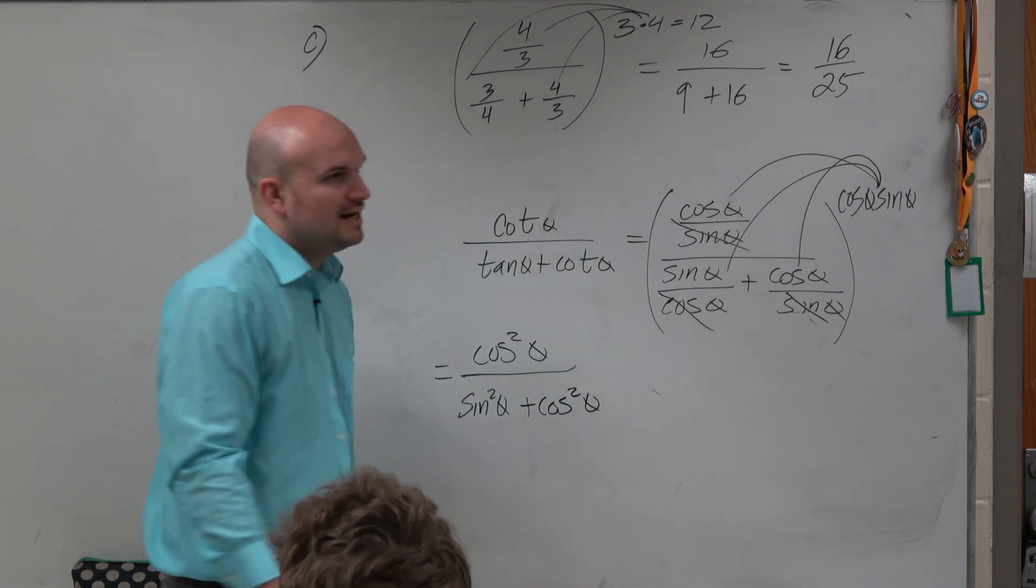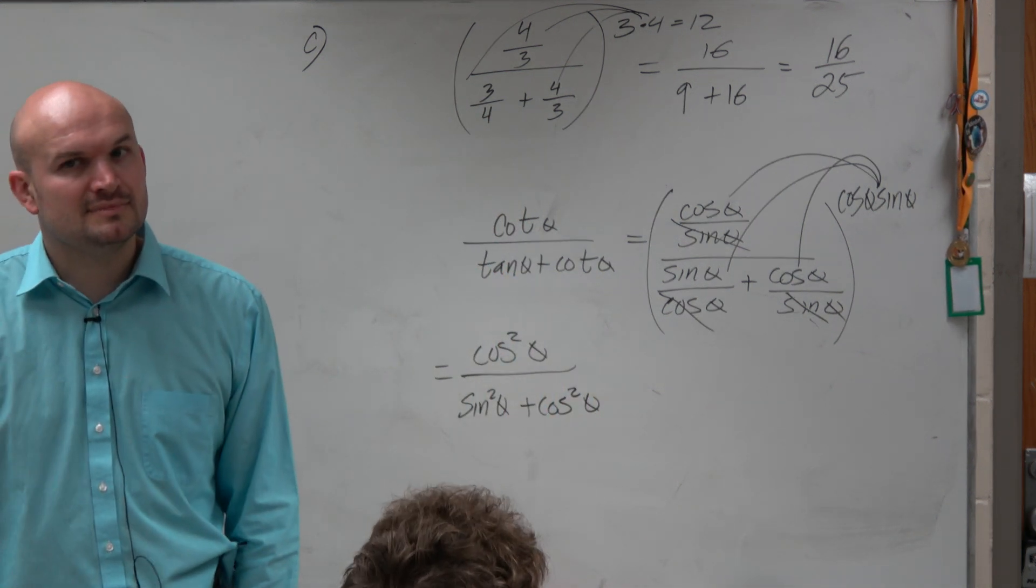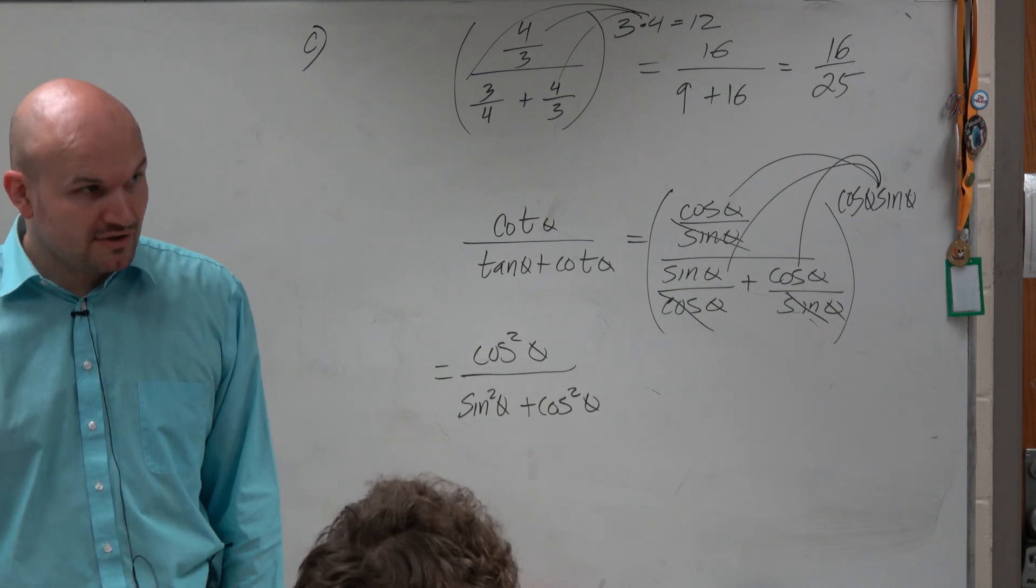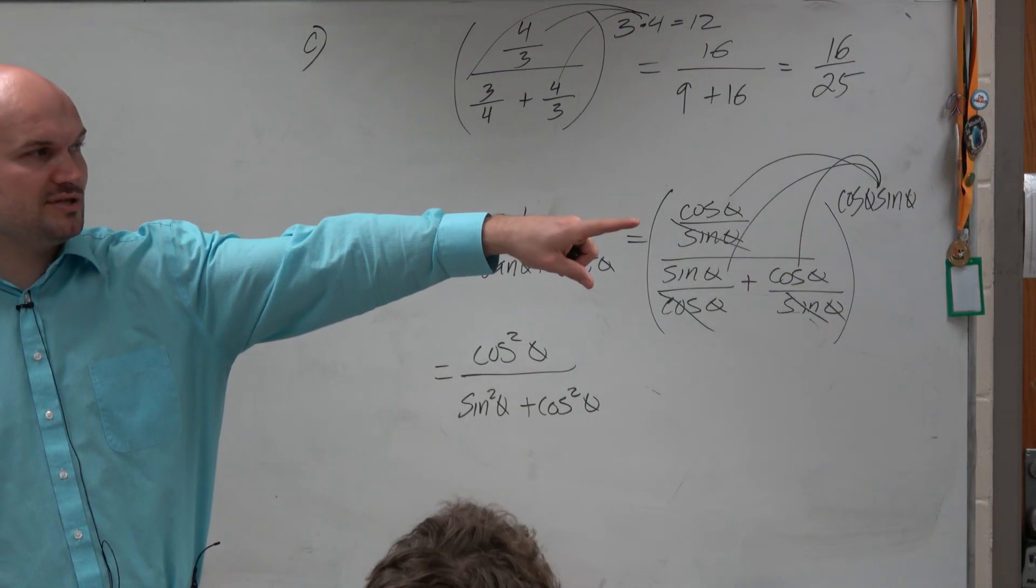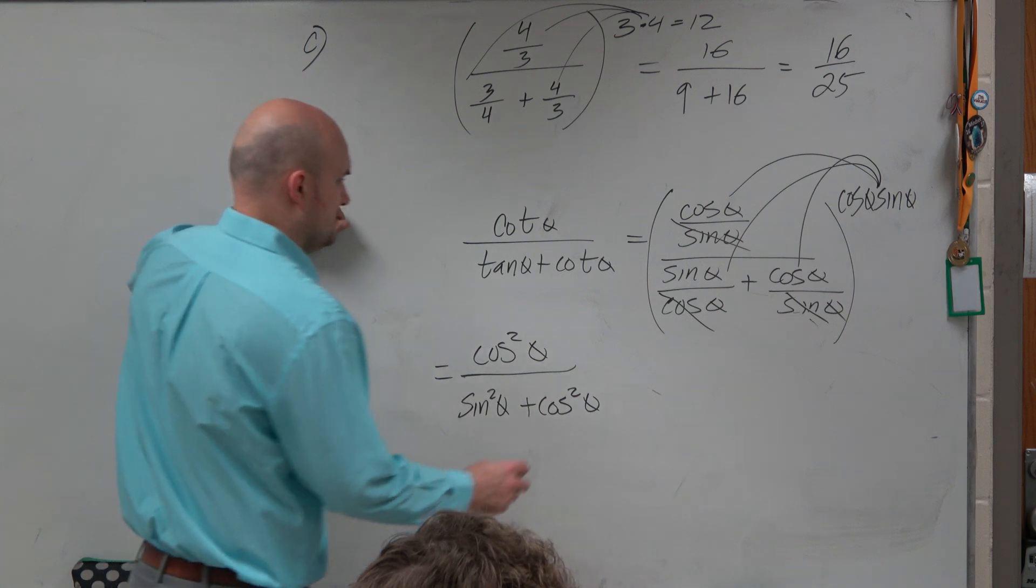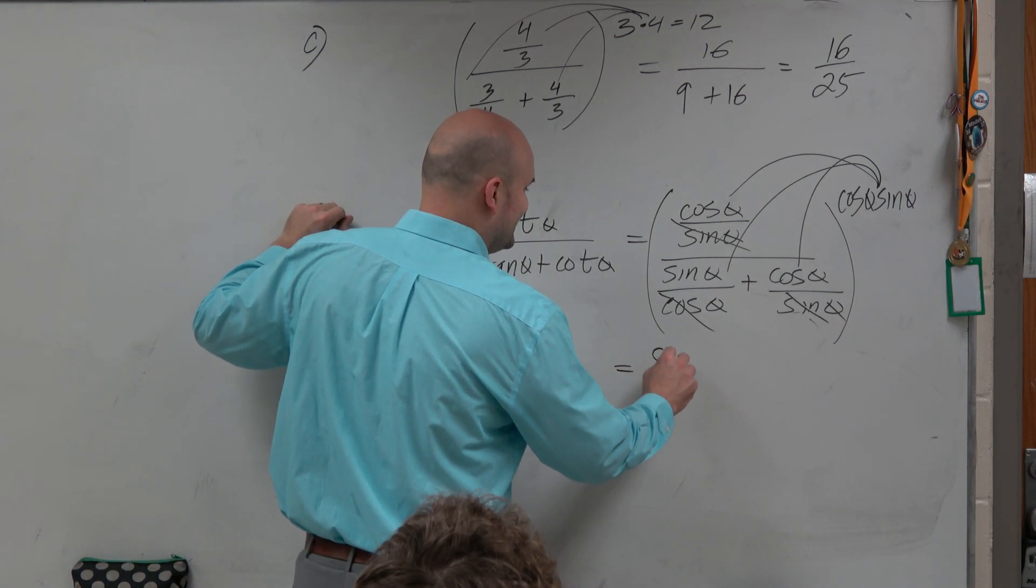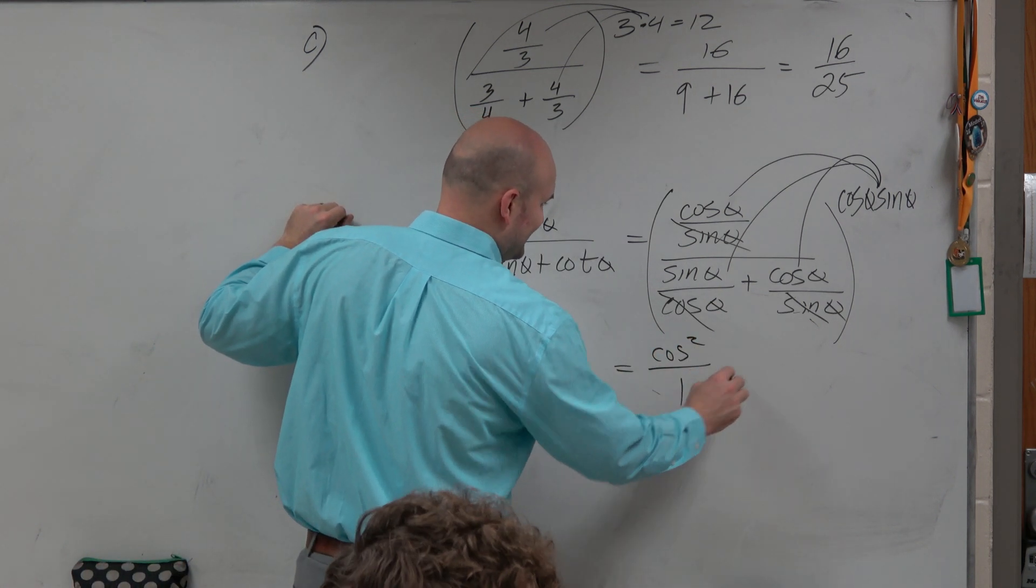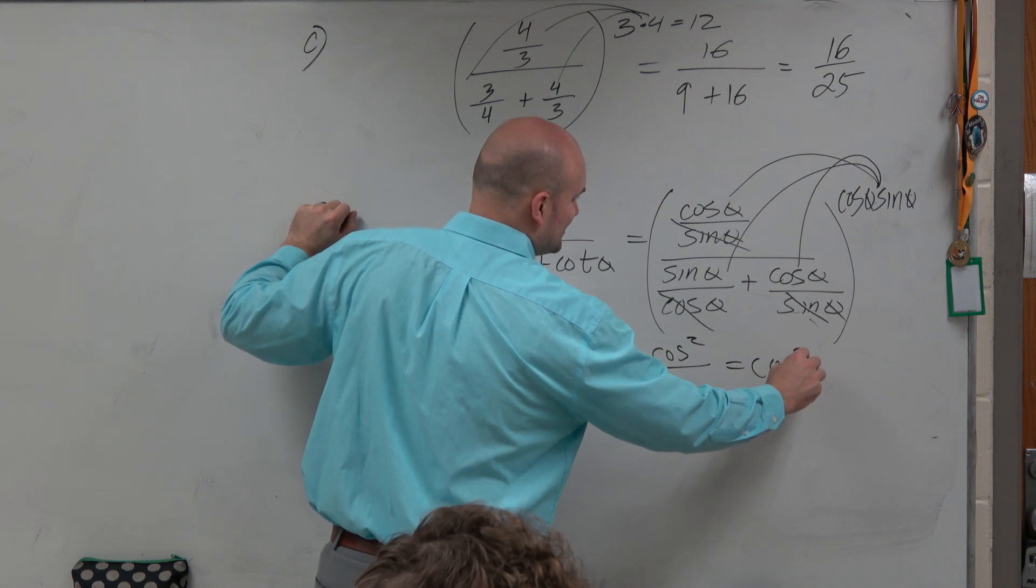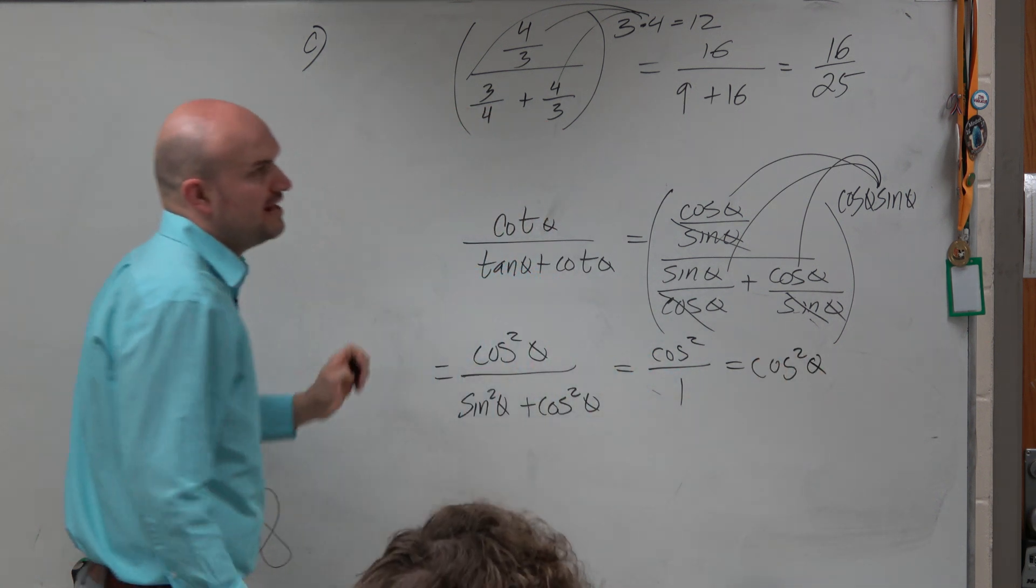And again, I realize, can I simplify this further? And again, we notice something. Sine squared plus cosine squared is equal to 1. So my simplified answer is cosine squared of theta.